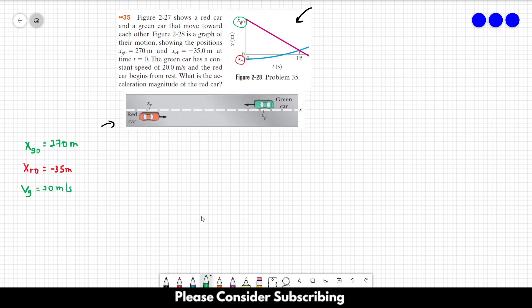The red card begins from rest, so the initial speed of the red card equals 0. And we also know that the acceleration of the green card is 0, because it has constant speed.